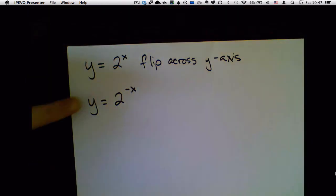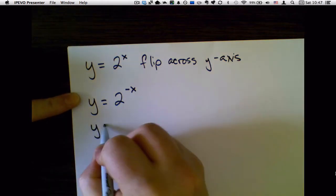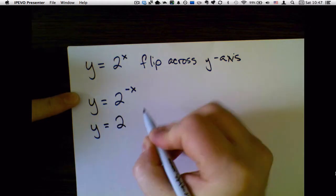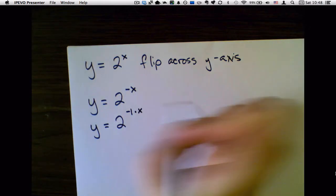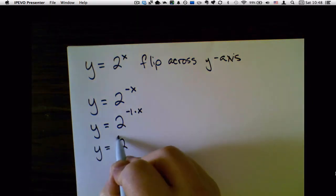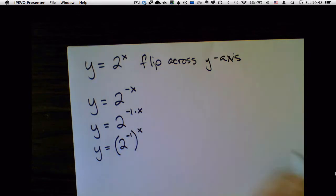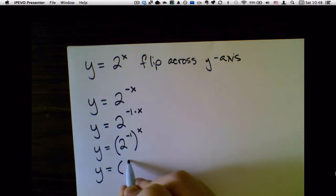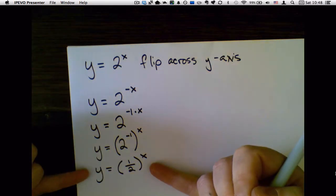So I'm going to apply some algebra to this. y = 2^(-x). Instead of writing -x, I'm going to write -1 times x. Then I'll use the power of a power rule backwards, which means y = (2^(-1))^x. Since 2^(-1) = 1/2, we have y = (1/2)^x.